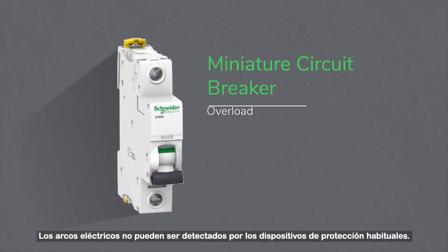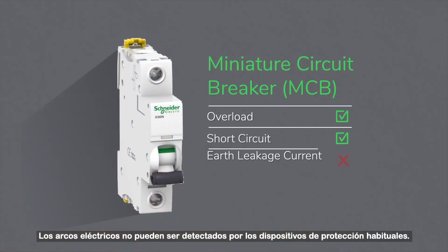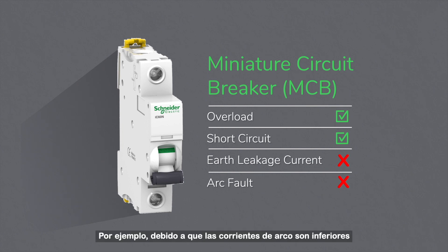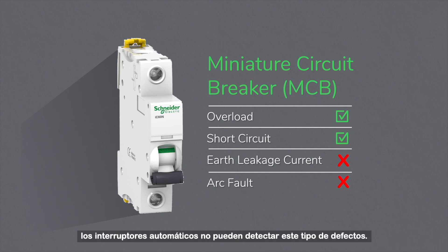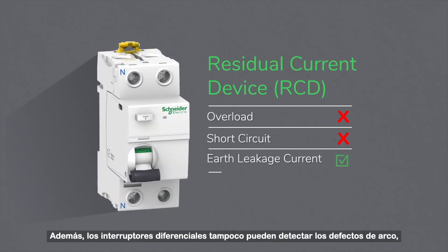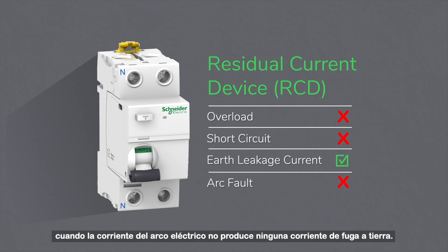Electric arcs cannot be detected by common protective devices. For example, because arc currents are lower than rated or short circuit currents, MCBs cannot detect such type of faults. Furthermore, RCDs are unable to detect arc faults as well, when the arc current isn't producing any earth leakage current.